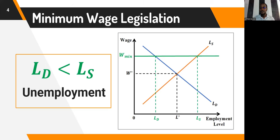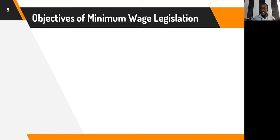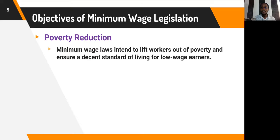This is the situation we discussed when talking about equilibrium determination of wages in labor markets in our previous lecture. Now we need to understand the reasons for minimum wage legislation. The first reason is poverty reduction. Minimum wages are fixed above the equilibrium wage rate with the intention to increase the wages of workers and lift them out of poverty, so that even those earning lower wages can experience a higher wage rate for the work they do.